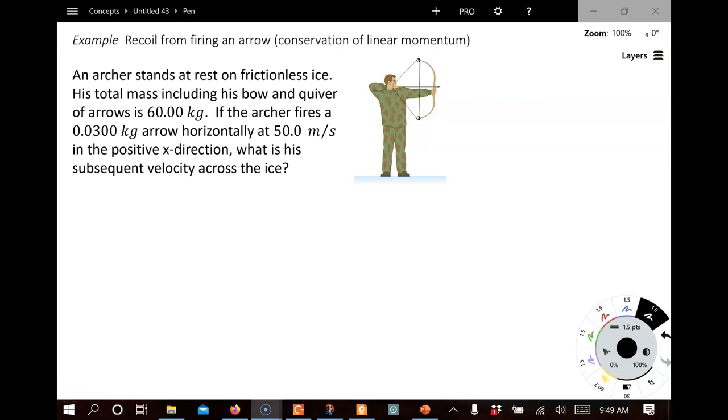Hi, this is an example problem from chapter 7 that uses the principle of conservation of linear momentum. Pause for a moment and read the question. So we see we have an archer here, and he's dressed up, standing on the ice, holding a bow with an arrow and is ready to fire the arrow, but hasn't done so yet.